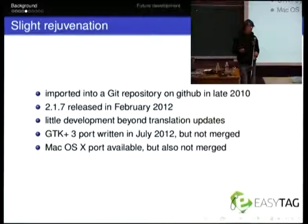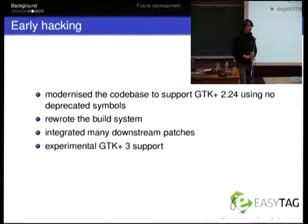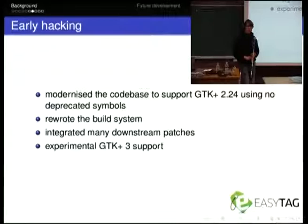I'm a GNOME contributor — I maintain Cheese, Vino, Vinagre, and a few other things. It's a GTK application written in C, and it feels pretty GNOME-y. How about we move it to GNOME.org? We have Git there, we've got Bugzilla, we've got various other things. It's just a much nicer place to host things than SourceForge. I have no plans to make it a GNOME project — I don't think GNOME needs an ID3 tagger particularly. But the infrastructure is there, and it was pretty straightforward to move everything across.